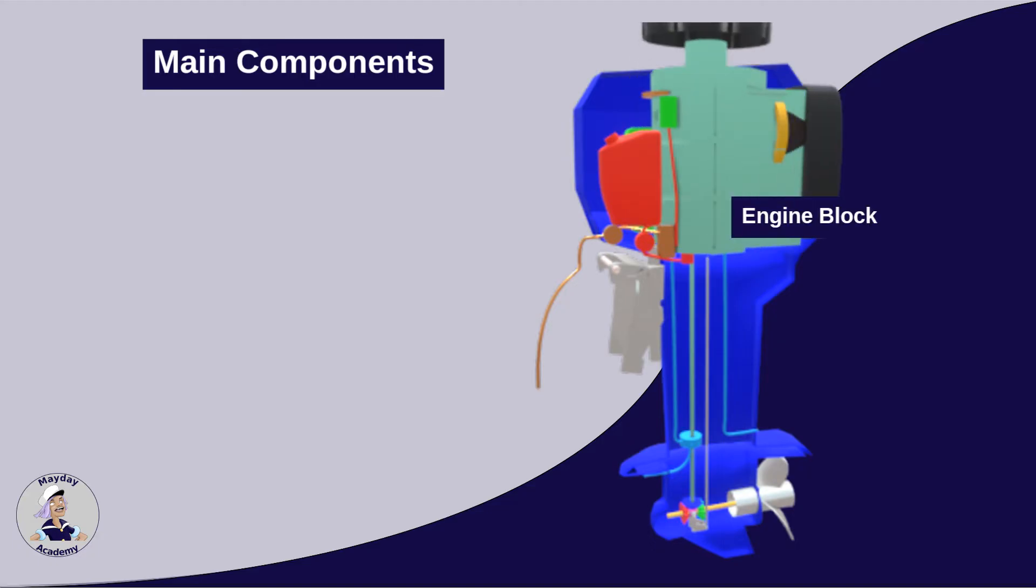The engine block is the core part where combustion occurs, generating the power to move the boat. It houses the cylinders, pistons and other critical internal components.